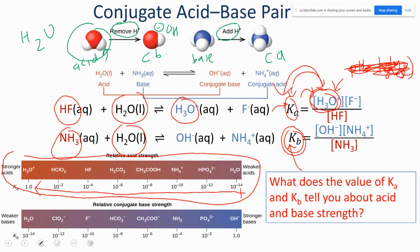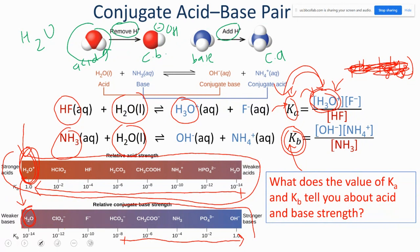Now, if an acid is strong — say H3O+ — then its conjugate base, which is water, is going to be the weakest base. As you go from right to left on the chart, the base strength increases. So: whenever the Ka value is high, the conjugate base is relatively weak. Whenever you have a strong acid, its conjugate base is going to be the weakest base. That's why H3O+ is the strongest acid, and its conjugate base H2O is the weakest base.